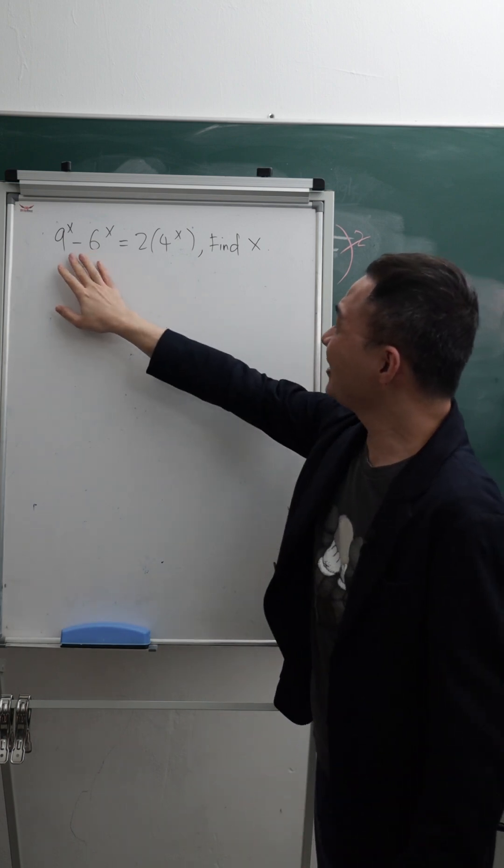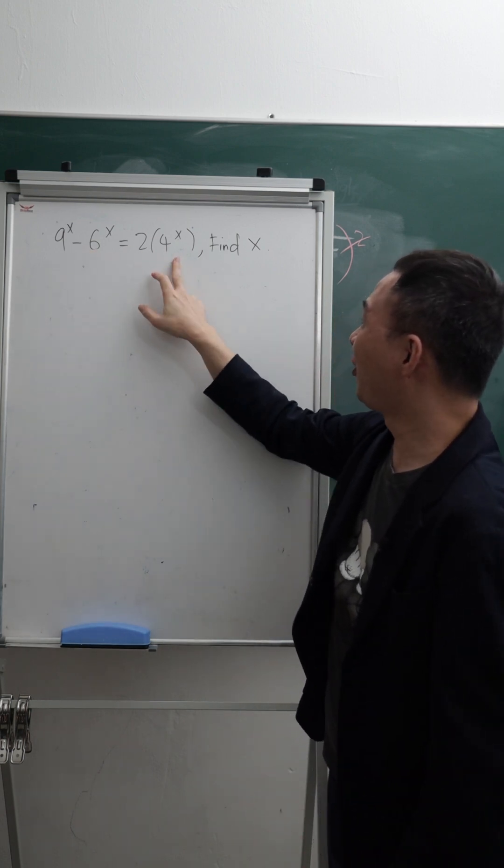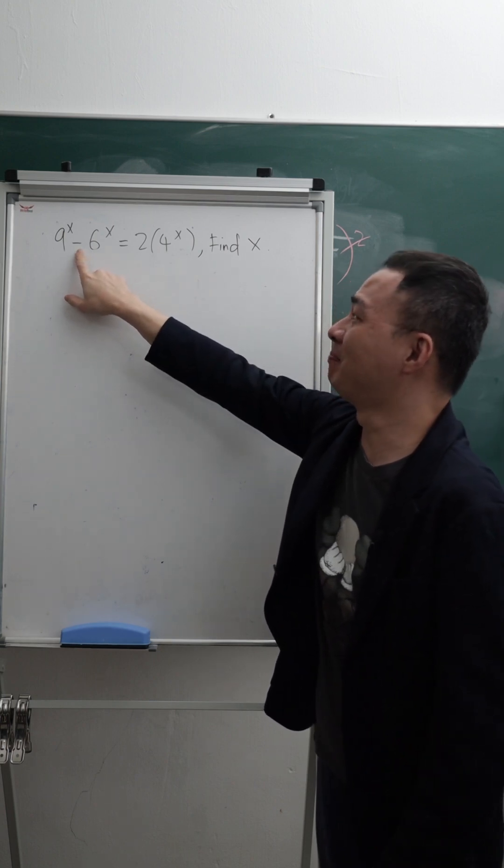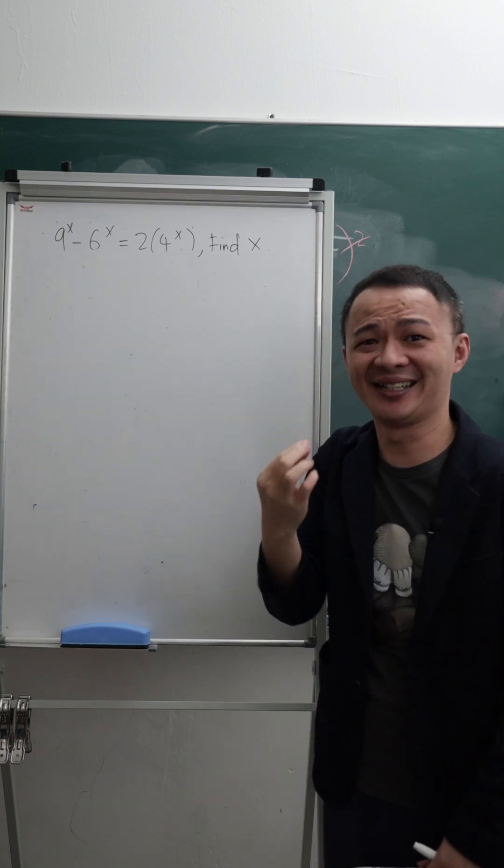So the first thing is, I see 9 power of x, 6 power of x, and 4 power of x, and then in the middle this one is minus. If this were multiply or divide, this question might be slightly easier.